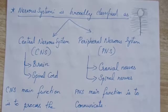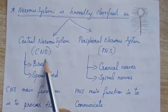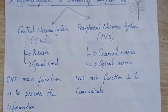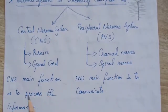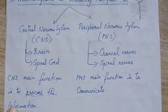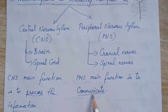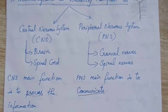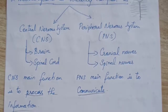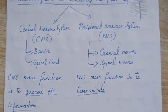The main function of the CNS is to process information — the brain is centrally involved in this. The main function of the PNS is to communicate with other parts of the body: passing decisions made in the brain to all body parts, and also carrying signals from sensory receptors back to the brain and spinal cord.